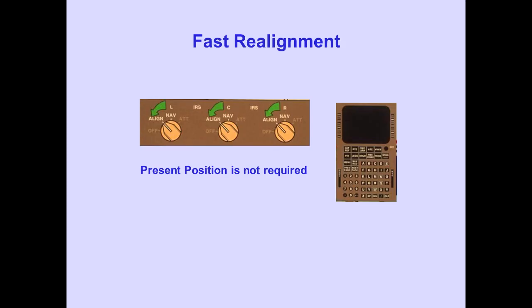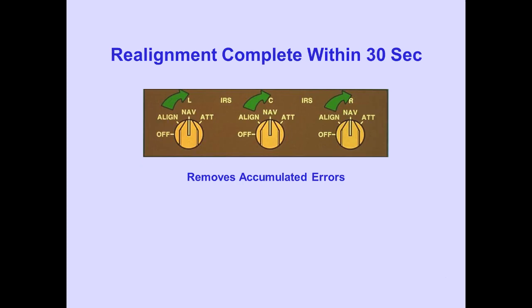A fast alignment may be accomplished if the combined operating time from the last full alignment to the next expected arrival does not exceed 18 hours. To accomplish fast alignment, rotate the IRS mode selector to align, enter present position, and rotate the IRS mode selector back to NAV. Although it's not necessary to enter the present position, doing so results in greater accuracy. Rotating the selector to NAV, the realignment begins. Fast realignment completes in 30 seconds. Fast realignment removes accumulated acceleration errors, providing for more accurate operation.